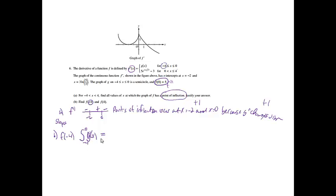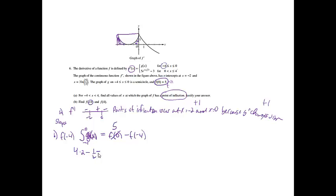So we integrate from negative 4 to 0. Taking the antiderivative of f prime leaves us with f, evaluated at the endpoints: f of 0 minus f of negative 4. They told us f of 0 equals 5, and I can find the integral from the picture — it's the area under the curve from negative 4 to 0. To calculate that, I take the area of the rectangle and subtract the area of the semicircle. The rectangle is 4 times 2, and the semicircle is one-half pi times 2 squared, giving 8 minus 2π.